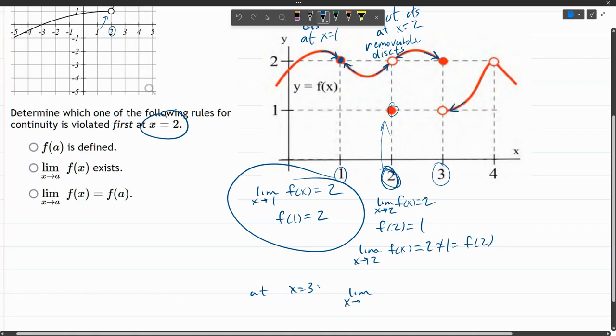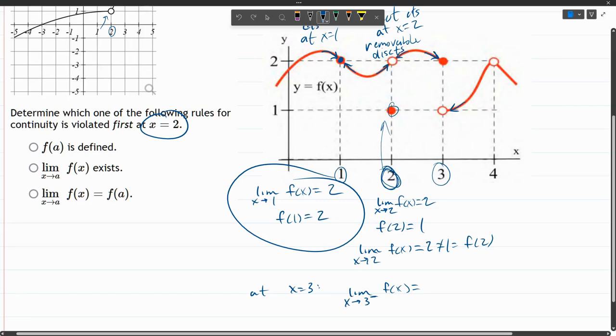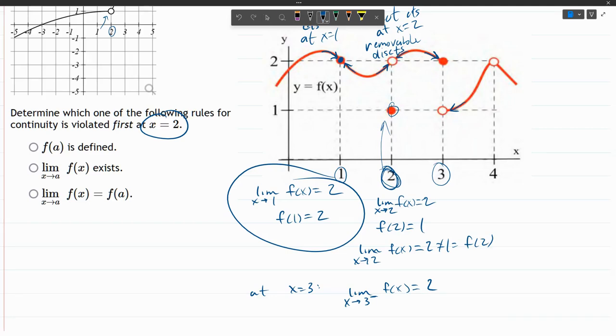So now we're focused at x equals three. Limit as x approaches three on the left, which I put a minus sign, and I always remember this negative means from negative land or from the left. So on the left, we're up here approaching y value of two.